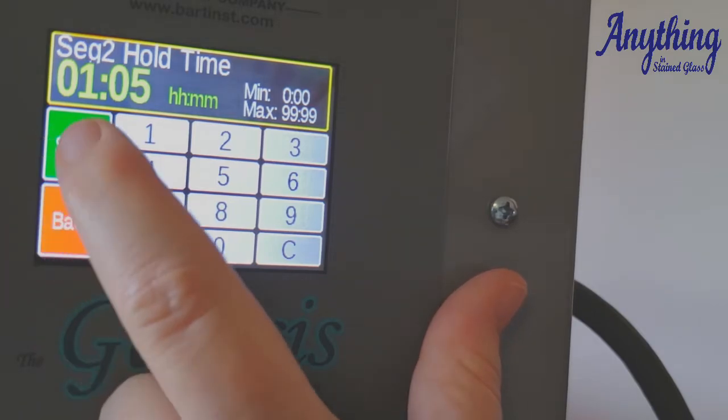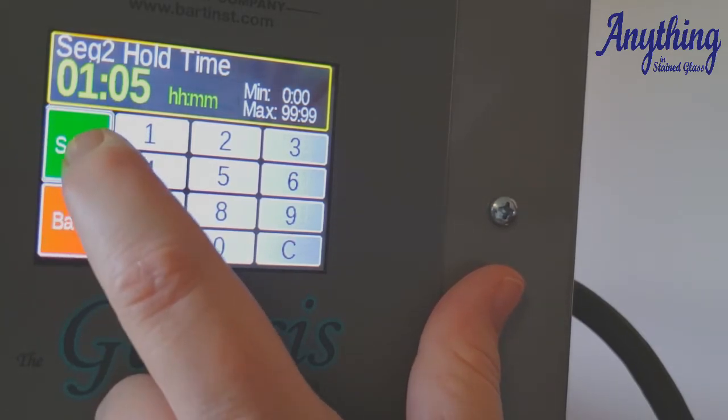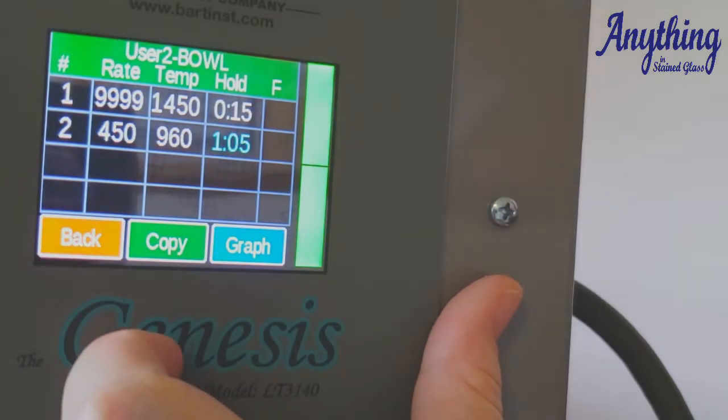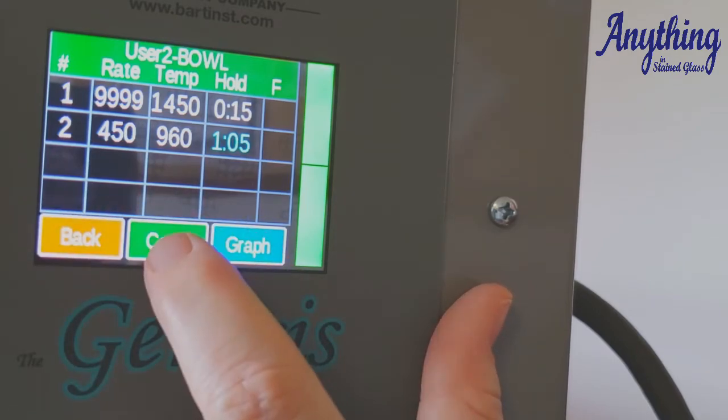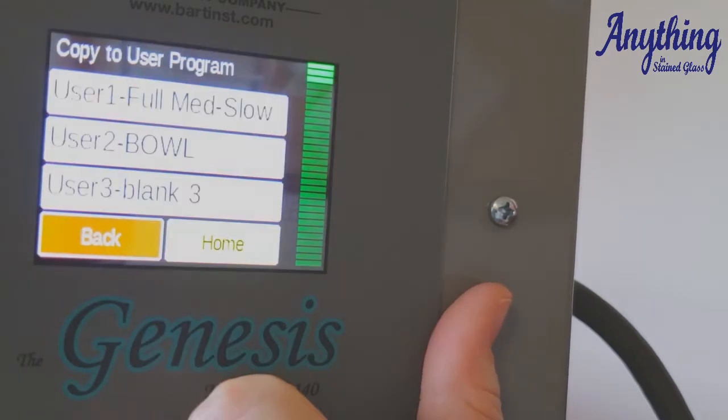And then we want to anneal it there for 1 hour and 5 minutes. Again, hours to the left, minutes to the right. It shows you how long it's going to be there. Now, we've got it programmed, so we press COPY.